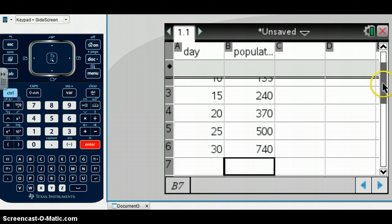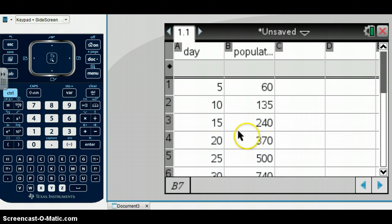Now, what we have here is our data in this list and spreadsheet, and what I want to do is create a scatter plot. On the Nspire, an easy way to do that is to insert a new page.